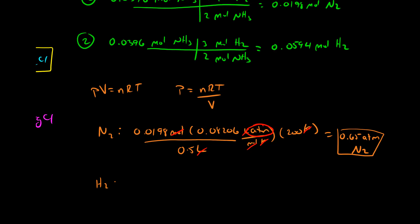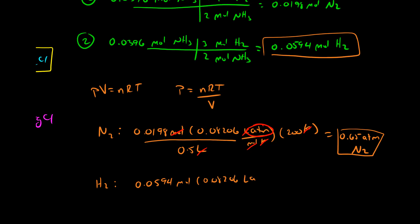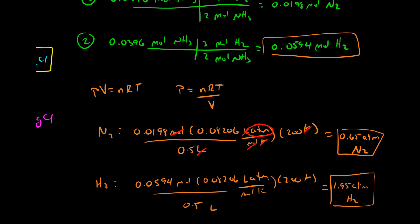For hydrogen, we had 0.0594 moles times our gas constant times our temperature divided by our volume, which gives us 1.95 atmospheres of hydrogen gas. The steps in this process are the same as before: use the ideal gas law to calculate moles from pressure, volume, and temperature; use the balanced reaction to convert moles of reactant to moles of product; then use the ideal gas law again to find the pressure of the gases produced.